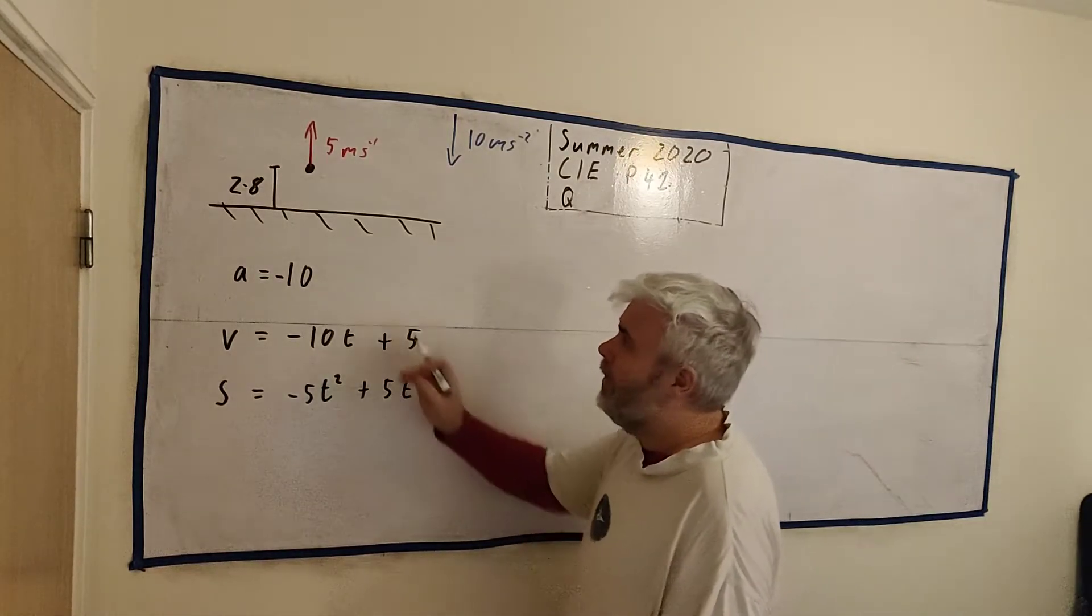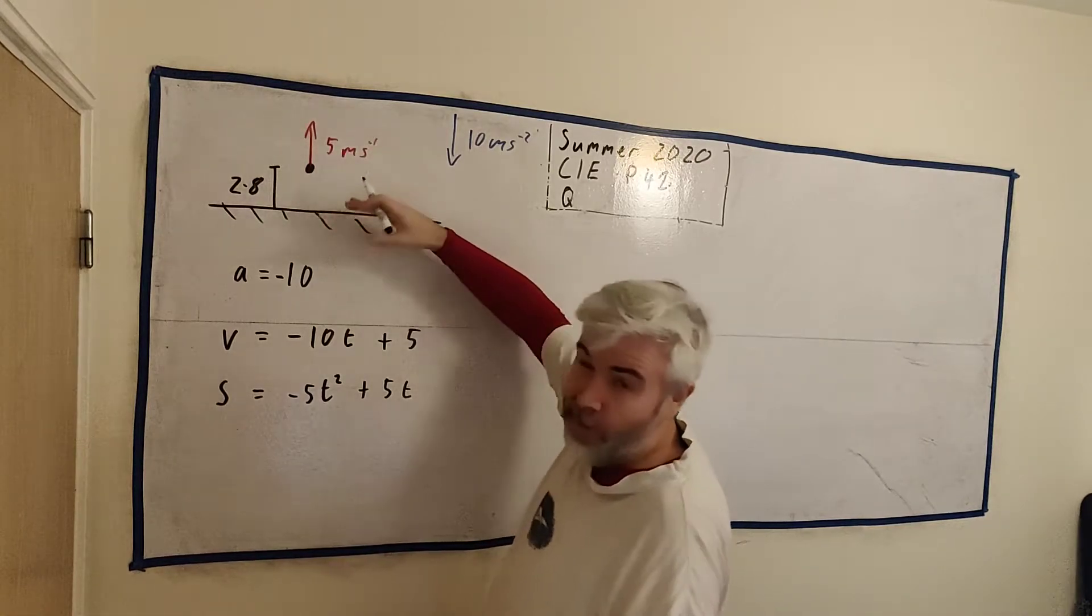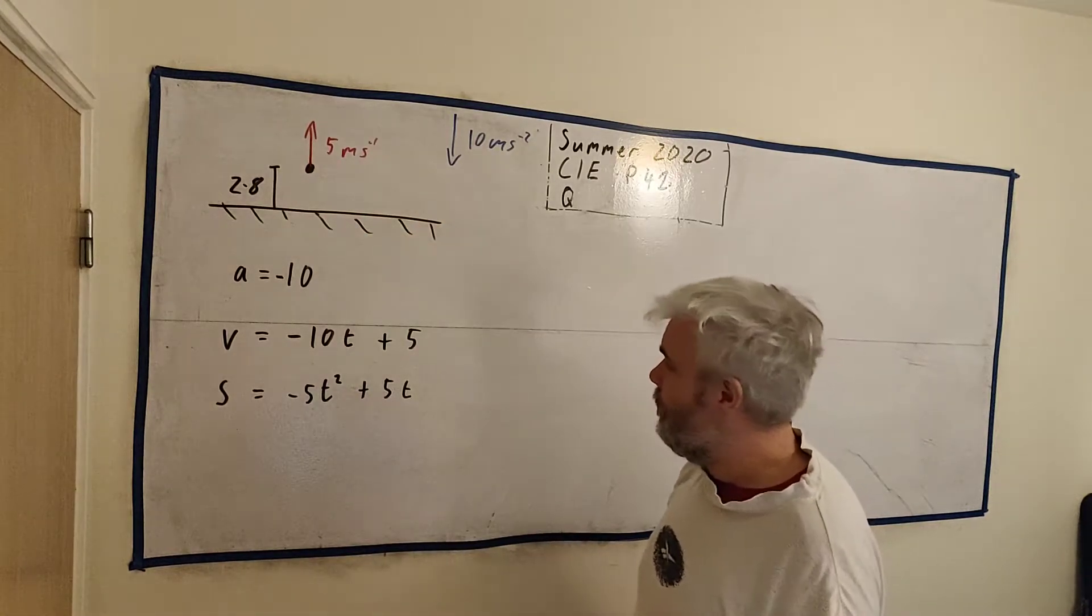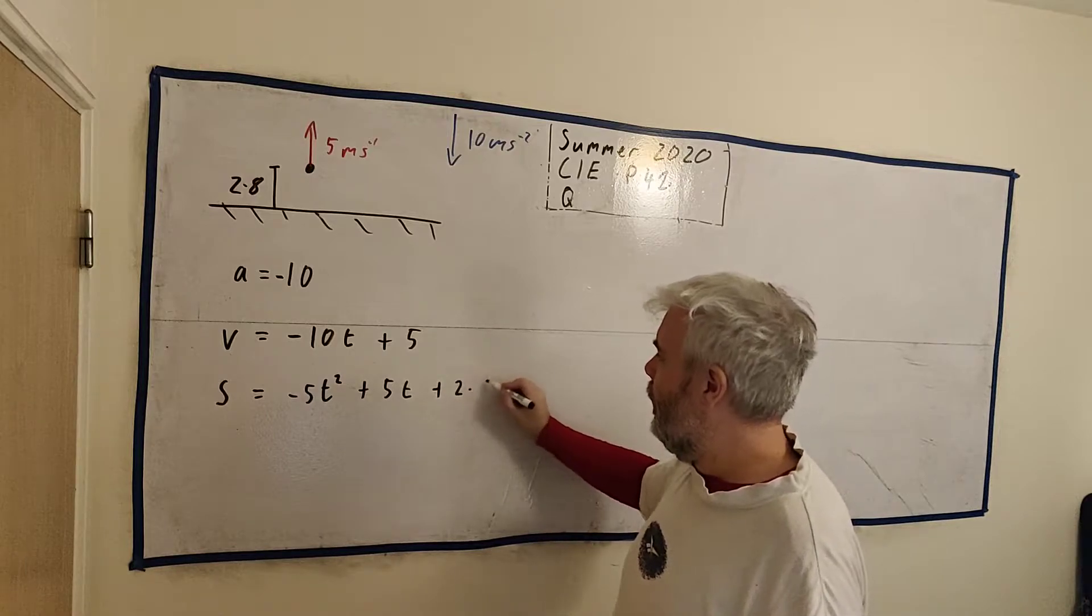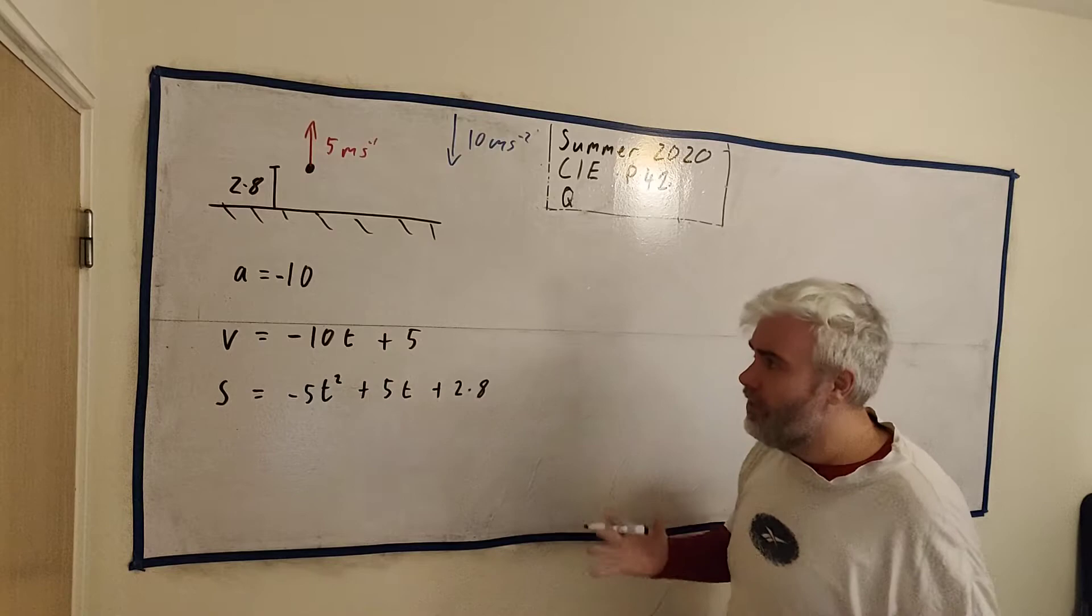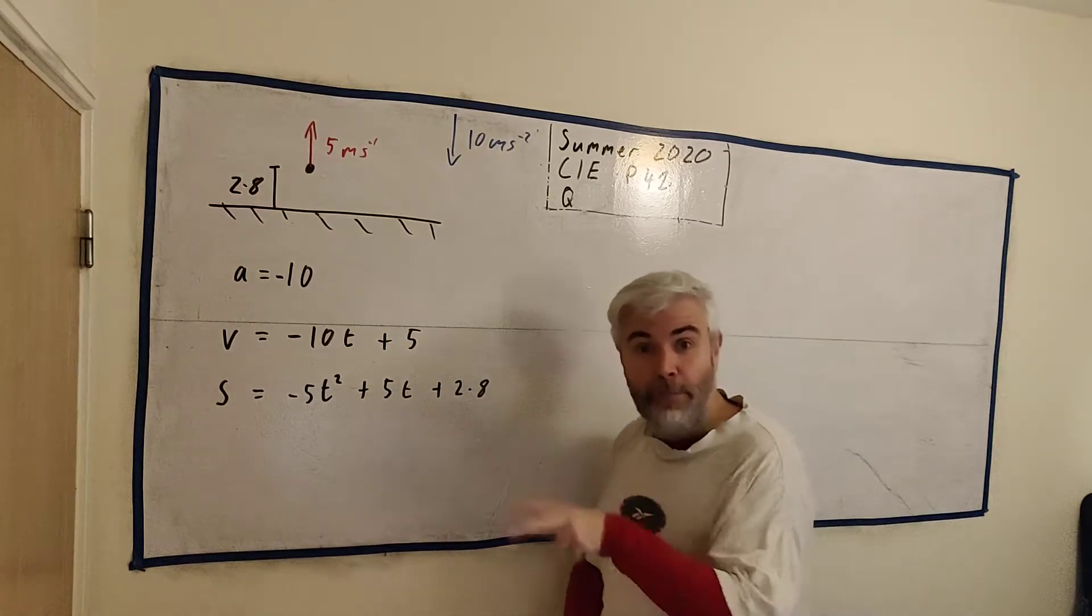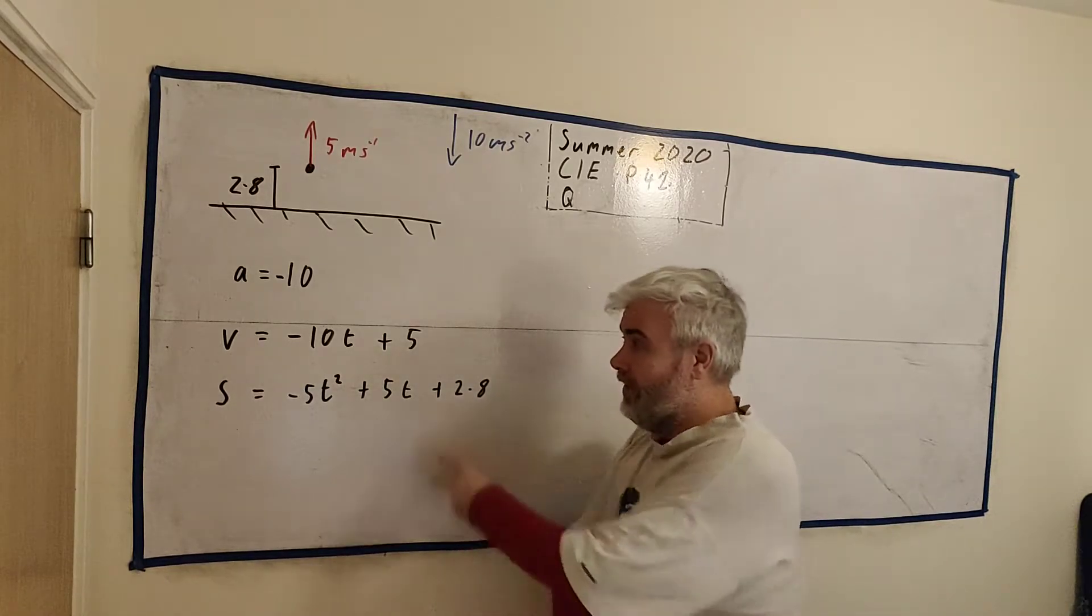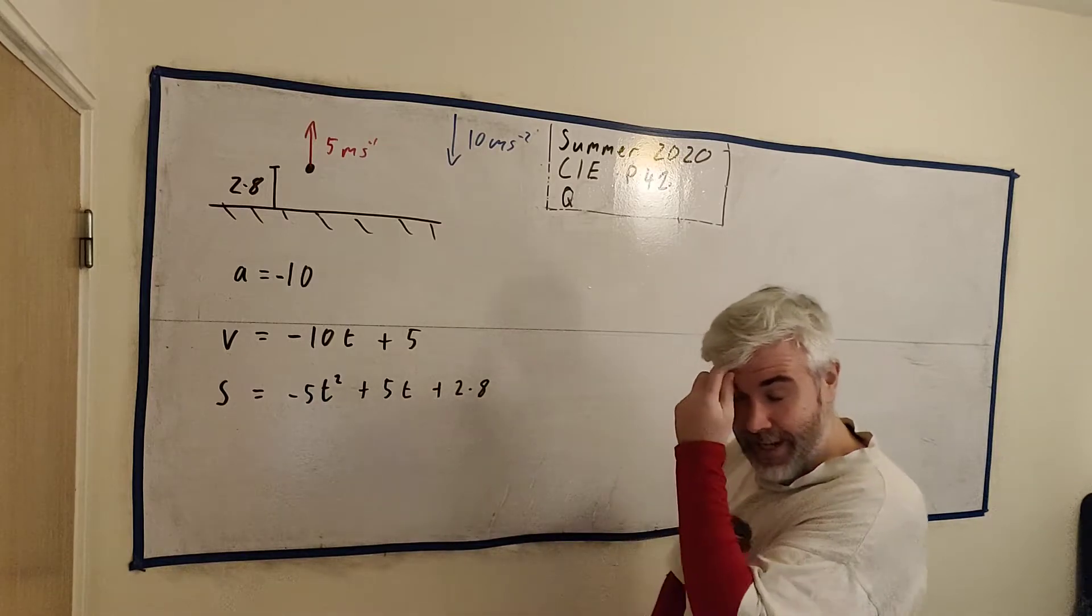And we need the initial state of this system. You could put 0 and start here, but I'll use the ground as my initial state, so I'll use 2.8 because we're 2.8 up. Now this tells you everything you need to know.